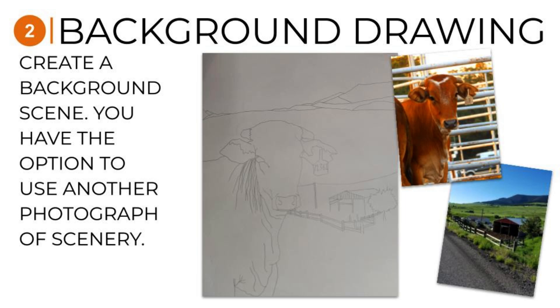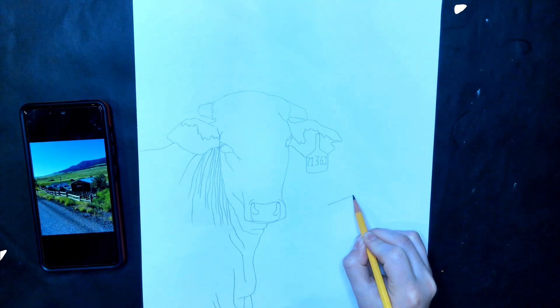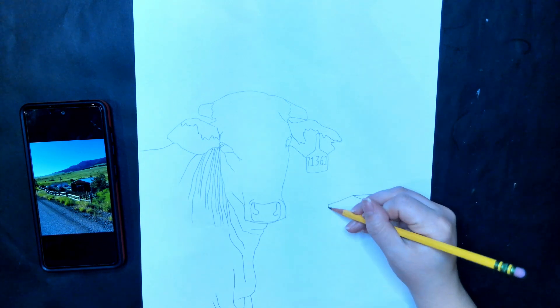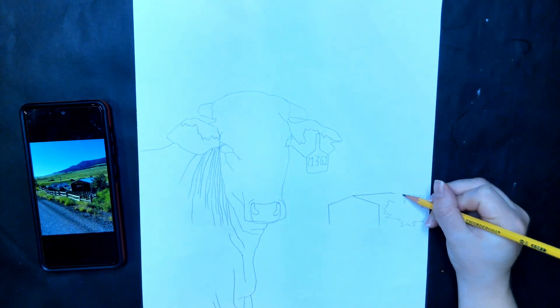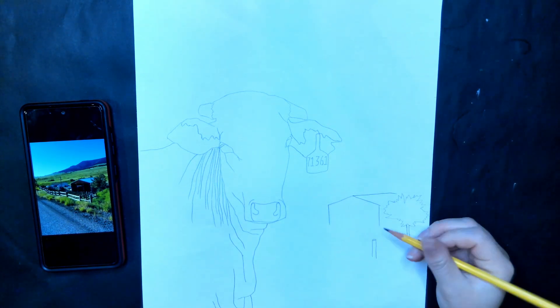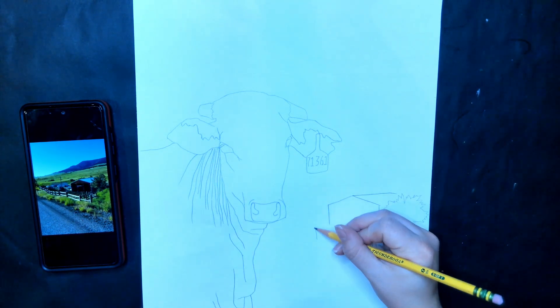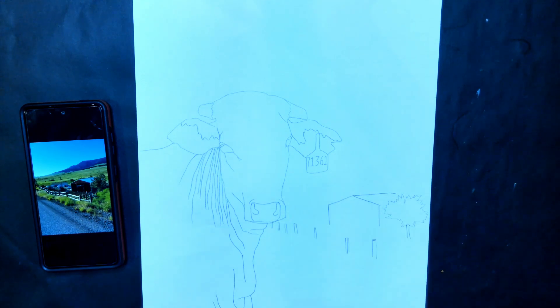Step 2: The Background Drawing. Create a background scene. You have the option to use another photograph of scenery other than the background behind your original reference photo.